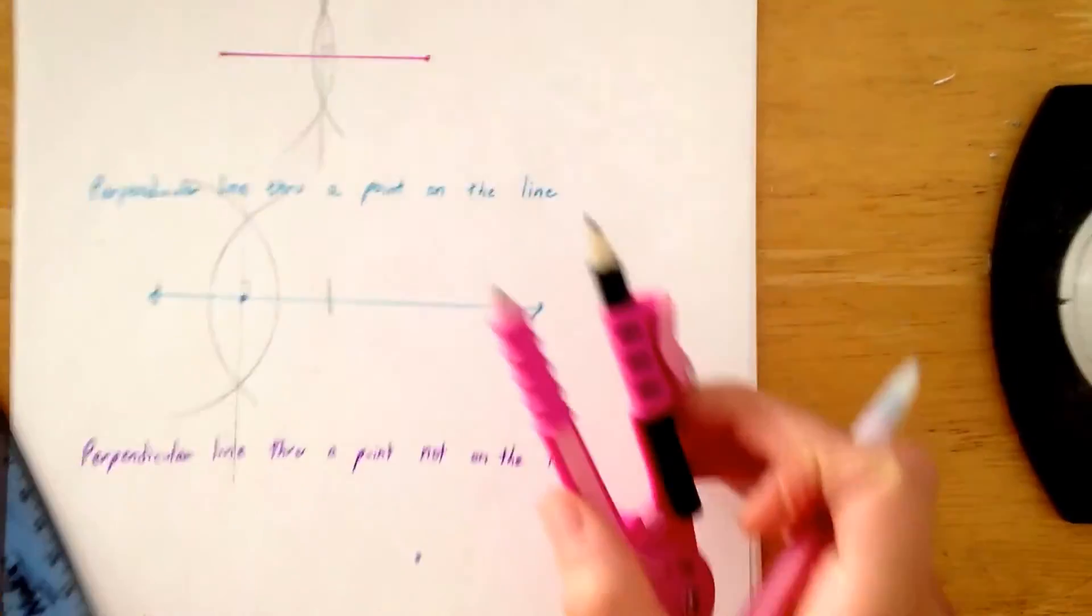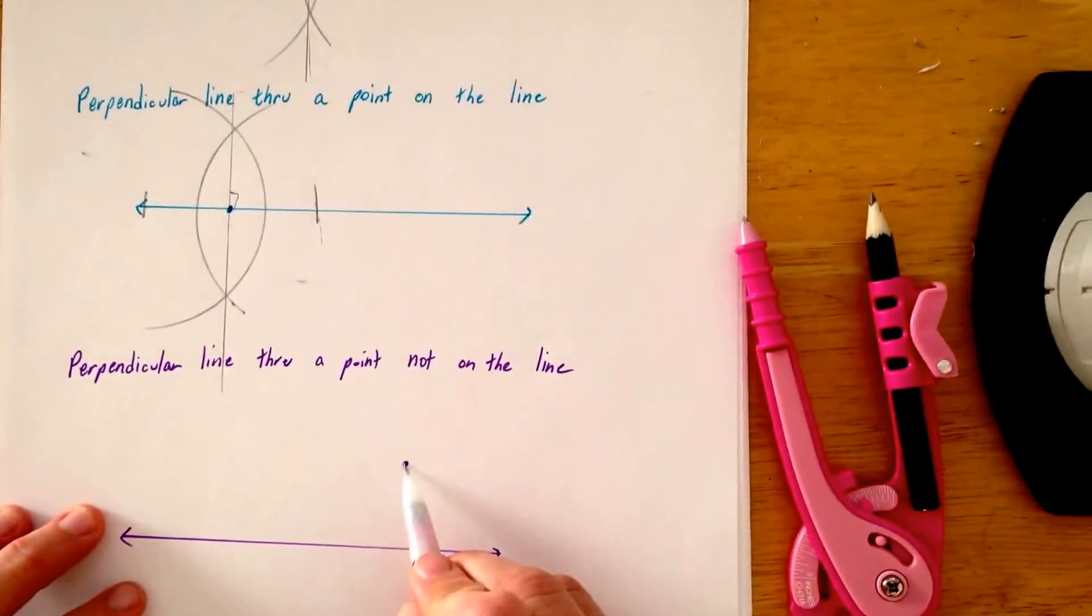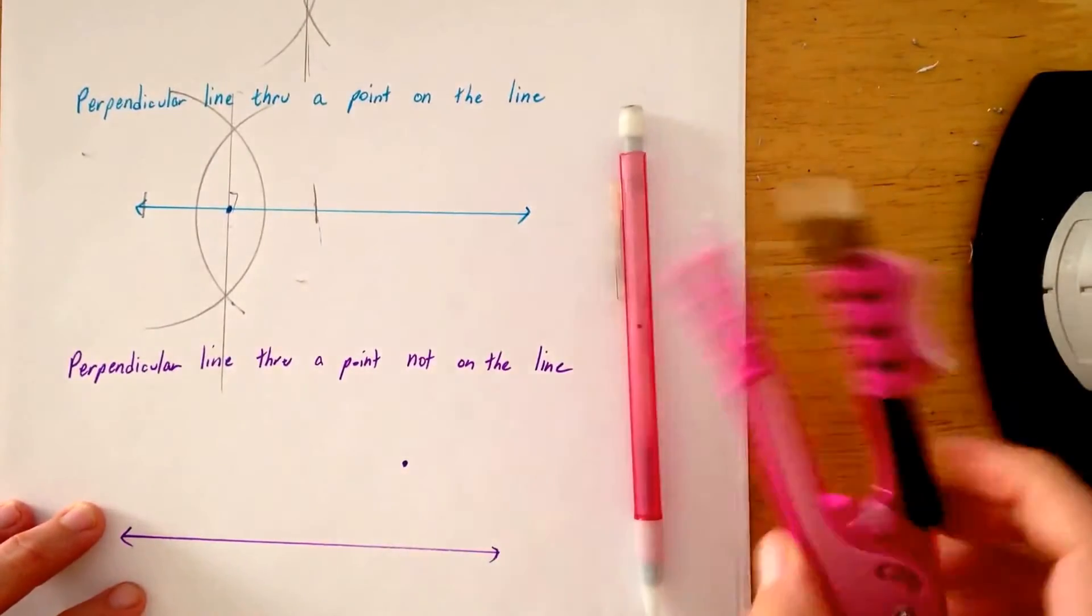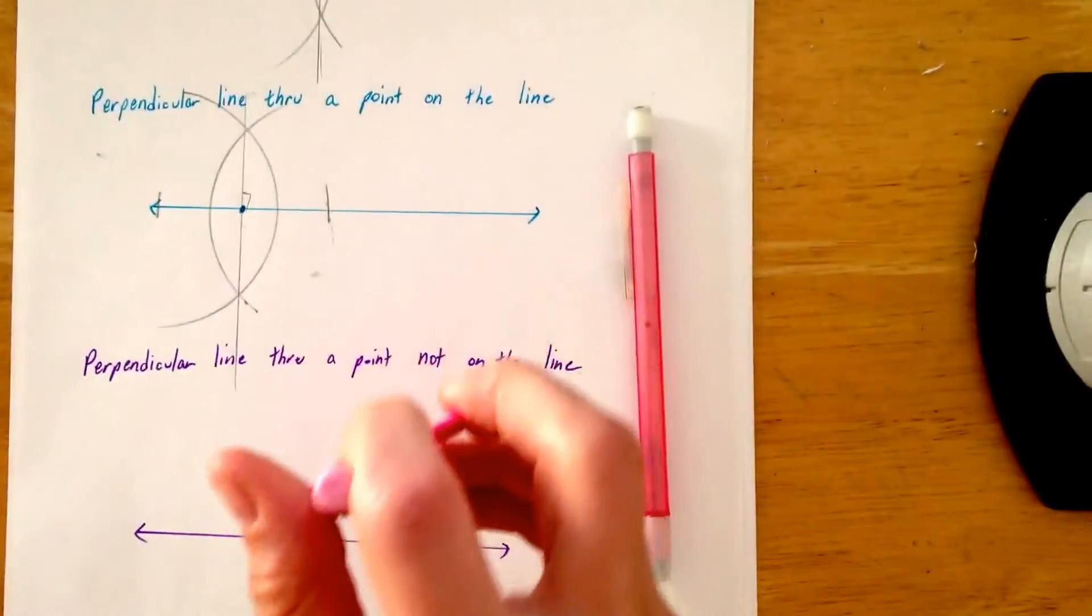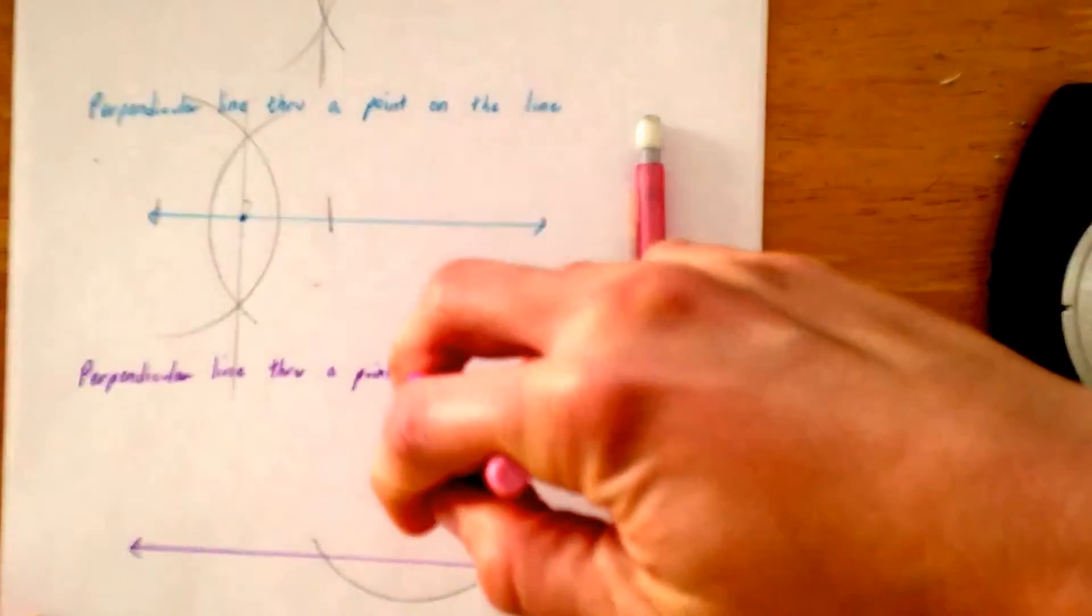Awesome. The next one here, same thing. Now the point's just not on the line. We're going to create our own end points again by just starting at that guy and drawing arcs there and there.